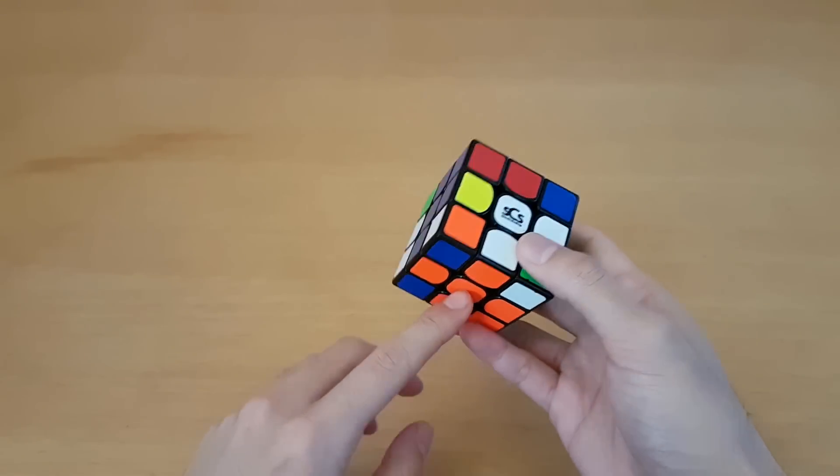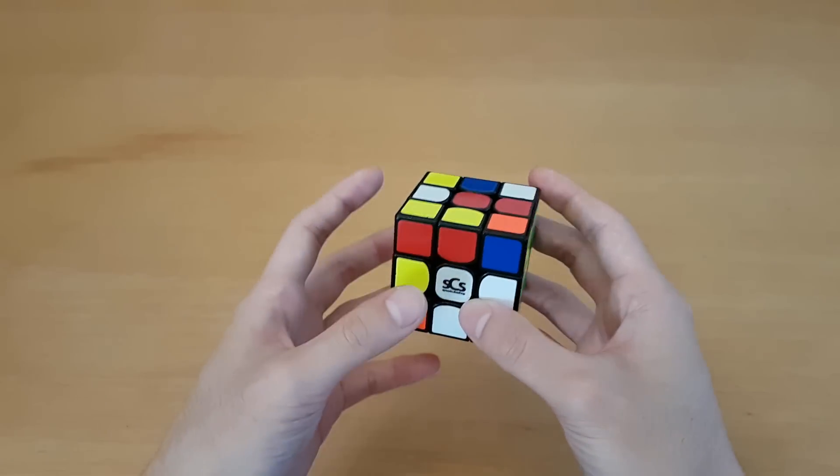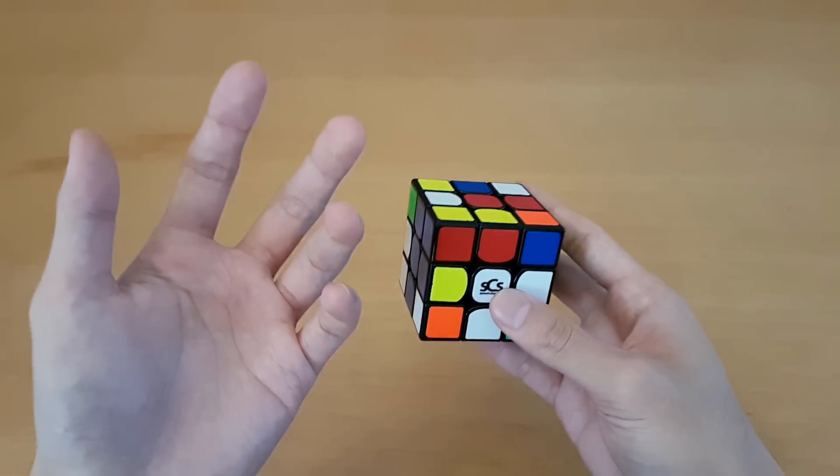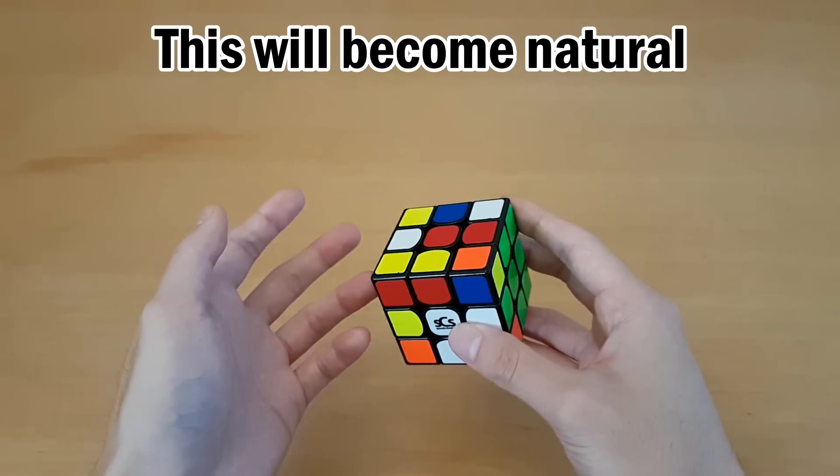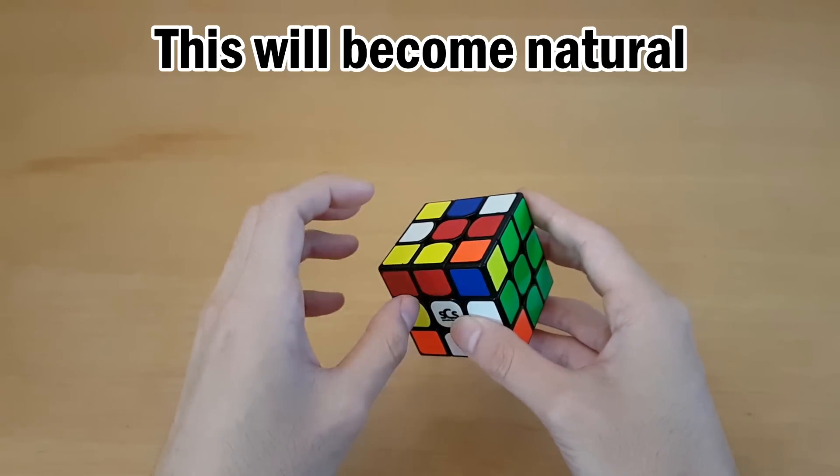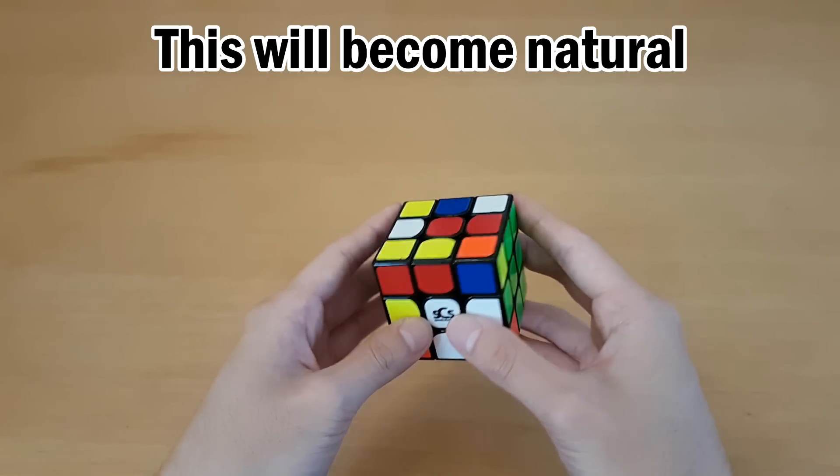So as soon as you pick orange cross just remind yourself to think about orange and red as you continue the solve, and of course this is going to become natural and you won't have to do it as you get better at being color neutral. But as you're learning I think this is a pretty important thing to make the learning process faster.